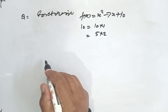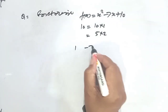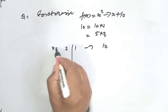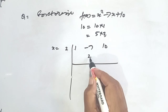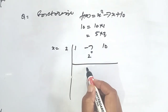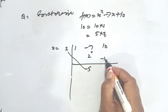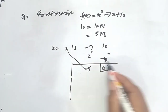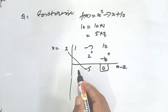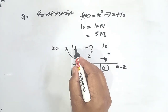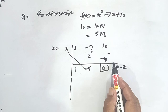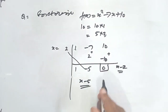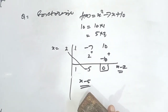According to Horner's method, we write down the coefficients of x², x, and the constant: 1, -7, and 10. We try x = 2: bring down 1, multiply by 2 to get 2, add to -7 to get -5, multiply -5 by 2 to get -10, add to 10 to get 0. The remainder is 0, so (x - 2) is a factor. The other factor is (x - 5), giving the factorization.